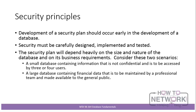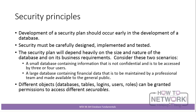In the second scenario we have a large database containing financial data, to be maintained by a professional team and made available to the general public. What the professional team can do and what members of the general public can do are very likely to be very different things. When talking about security in relation to databases we have the concept of securables — things that can be secured. Different objects including databases themselves, tables, logins, users, and roles can be granted permissions to access these different securables. In the first scenario every object can access everything, but in the second scenario we need a very careful mapping from objects to securables in terms of who or what can access what.